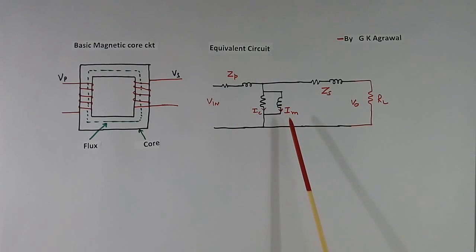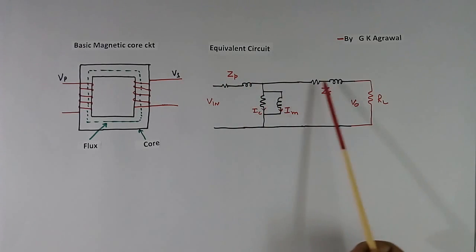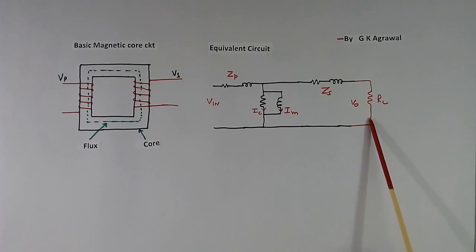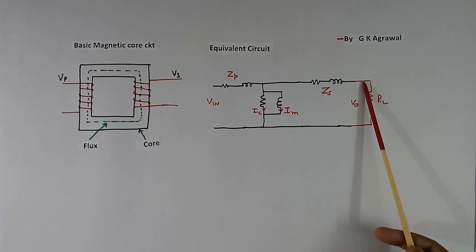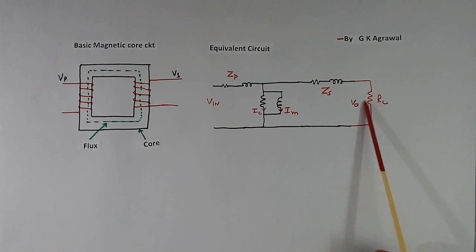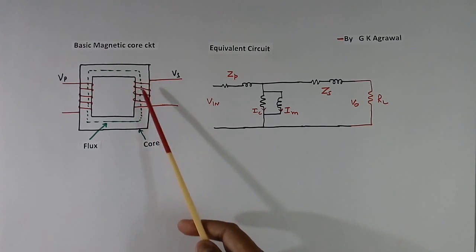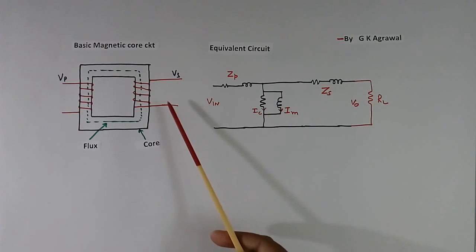This is the equivalent circuit of the PT. Here I have clubbed the two separate windings together. This shows the core loss, this is the magnetizing current, this is the primary impedance, and this is the secondary impedance. Because of these two impedances, when we connect a load, a current flows and there will be a voltage drop. If the load is resistive or inductive, voltage will be less. To compensate for that, the PT manufacturer will provide additional turns — suppose by calculation 100 turns are required, they will make 101, 102, or 103 — to compensate this drop and bring accuracy to the PT.